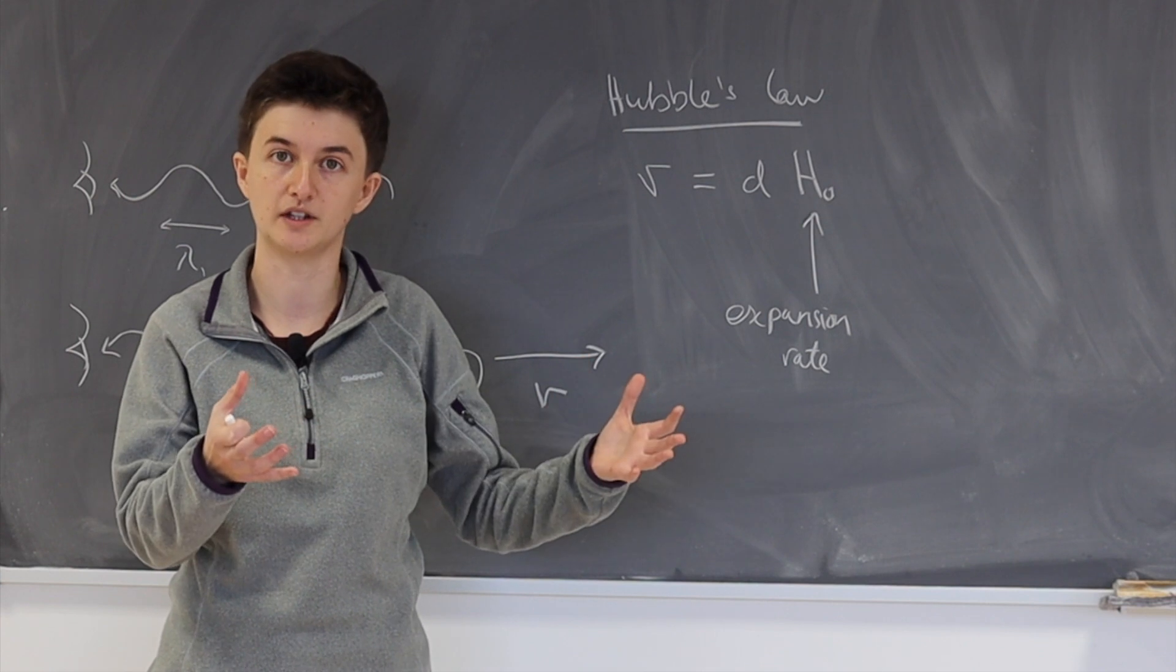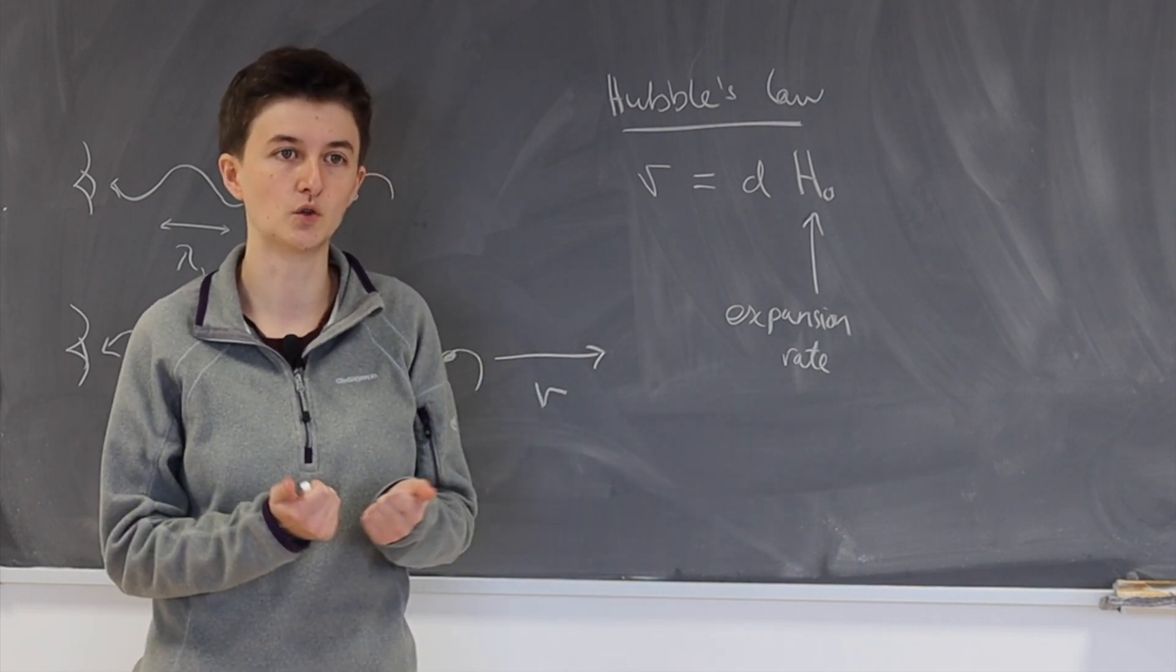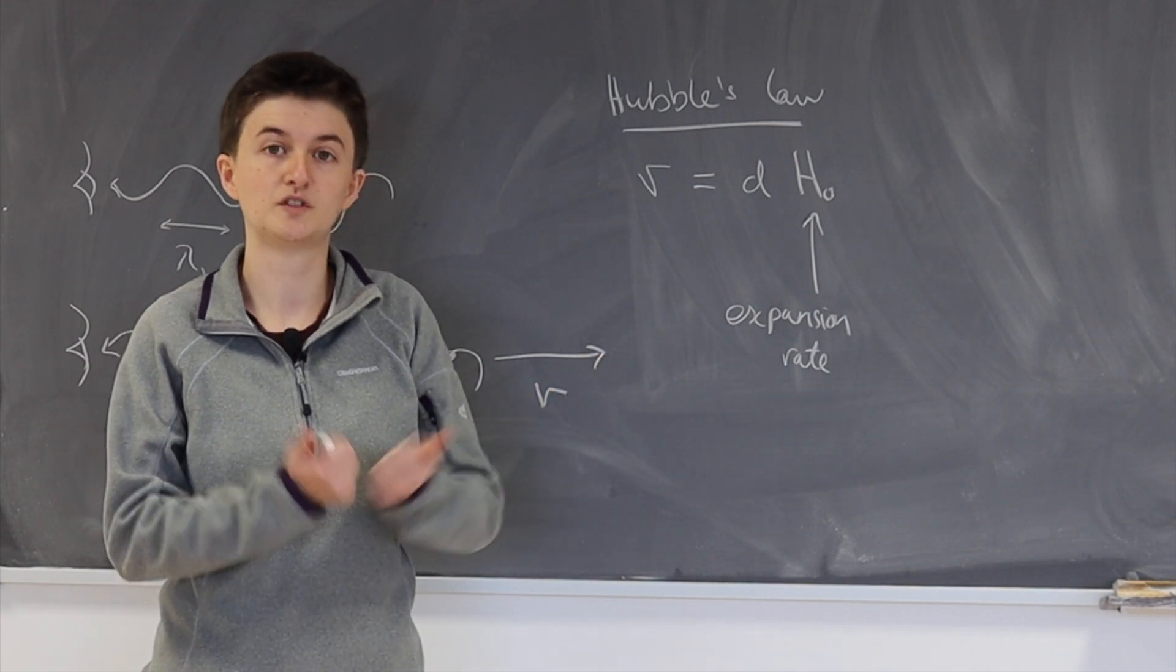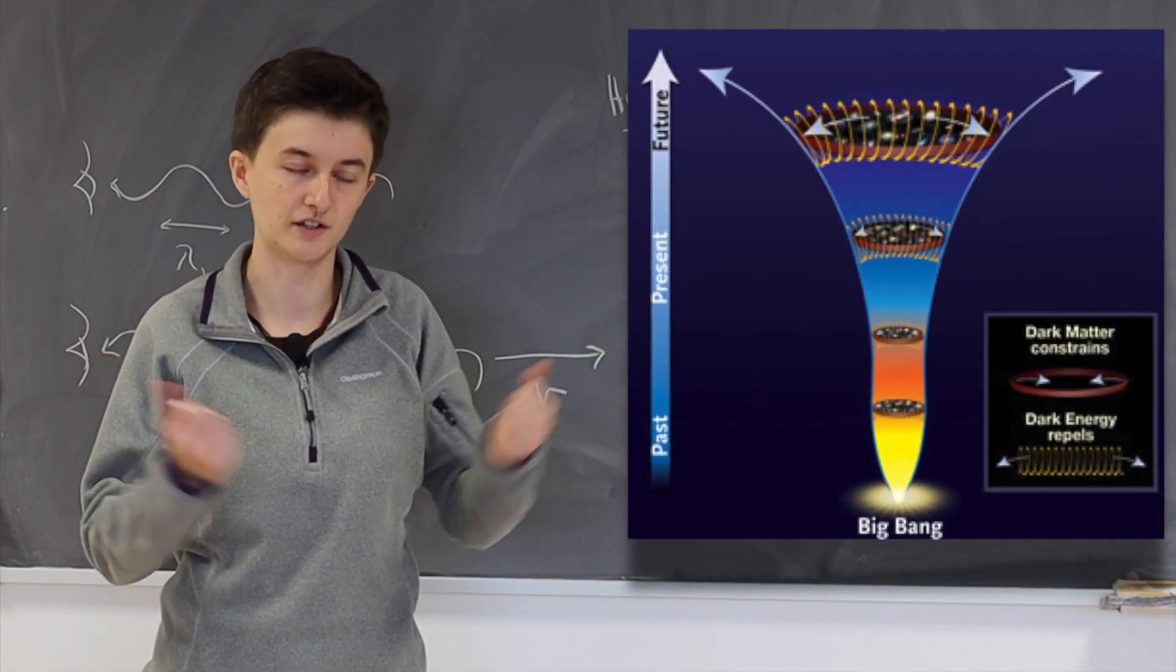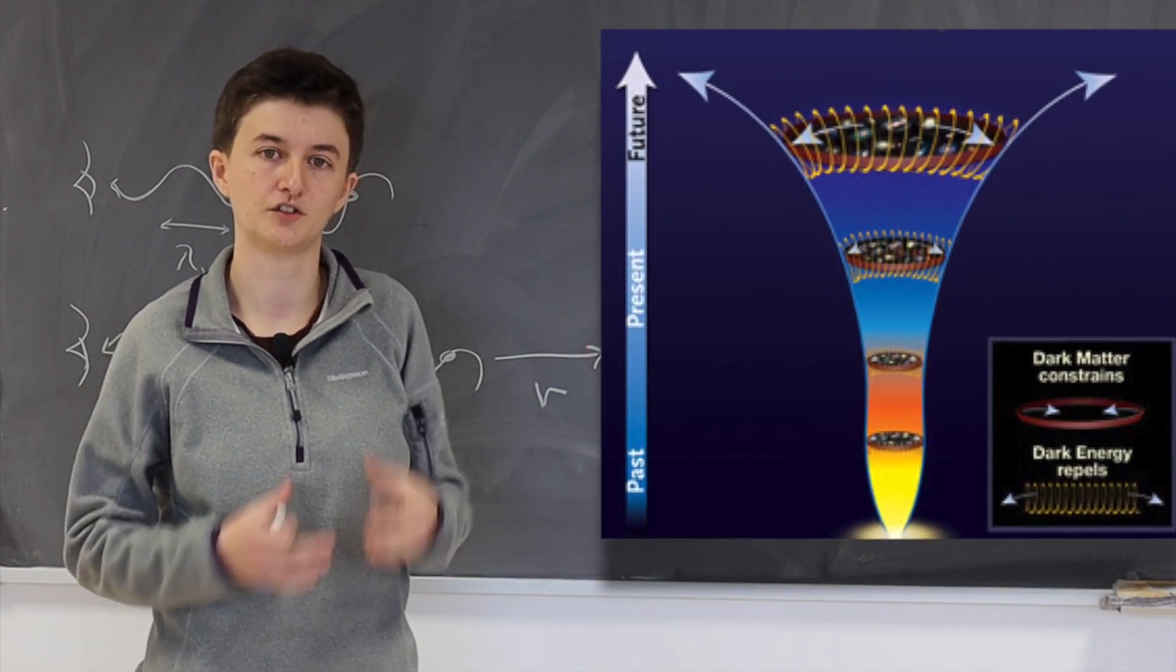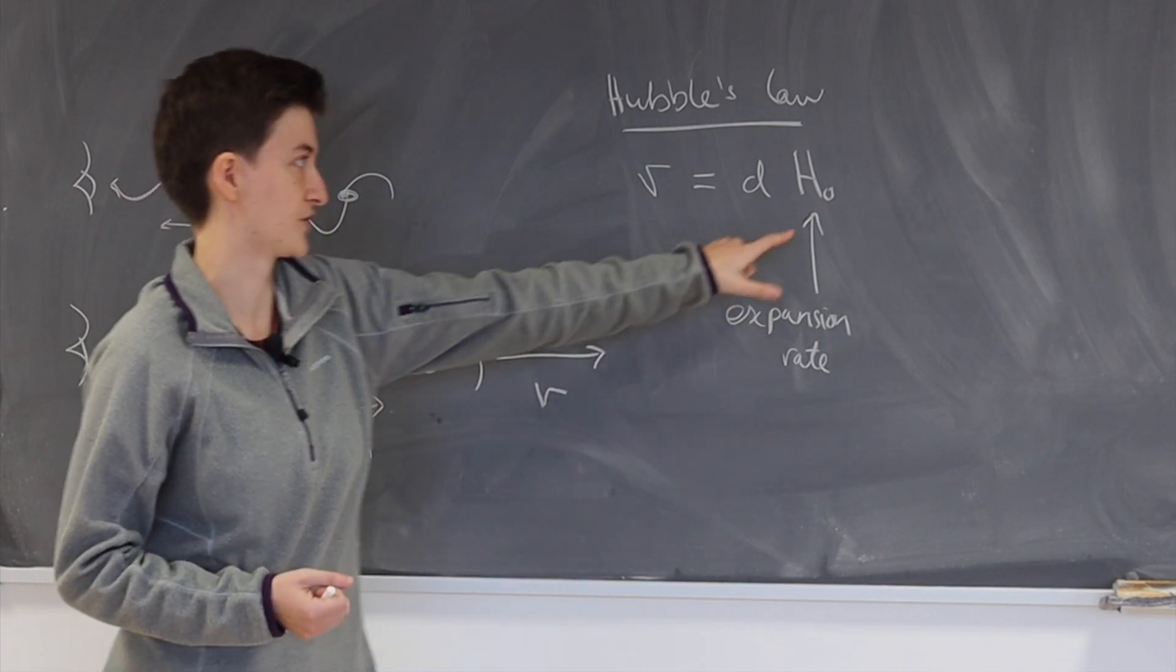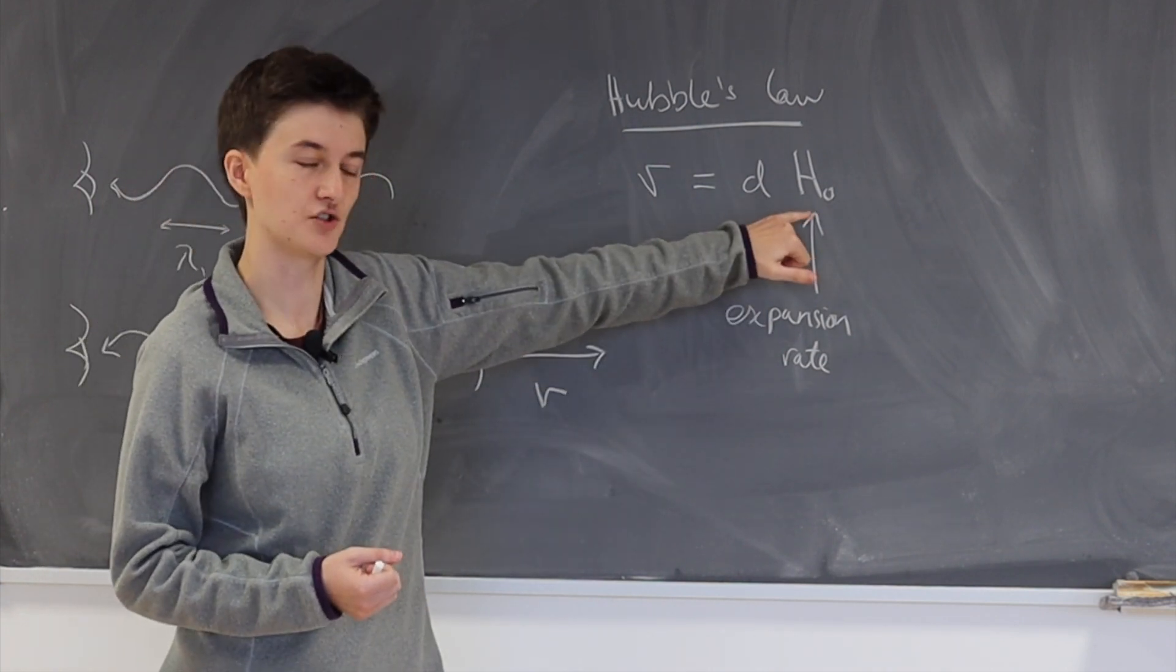So dark energy is a substance which we believe is acting on the universe at late times, so nowadays, which is causing this expansion to speed up all the time, to accelerate. So it's overcoming the force of gravity and causing our universe to expand ever faster and faster. And we can learn all about this expansion rate through measuring this parameter H0.